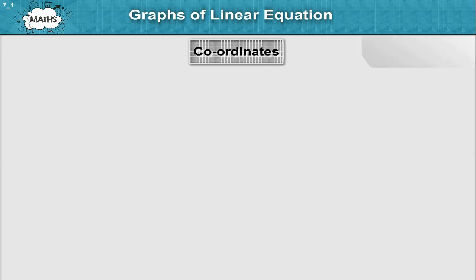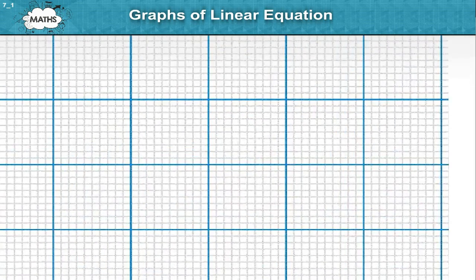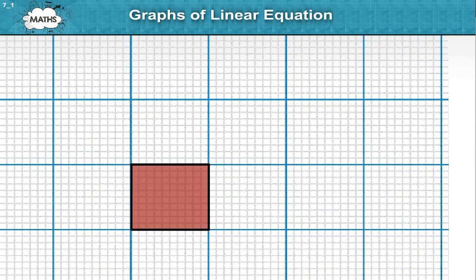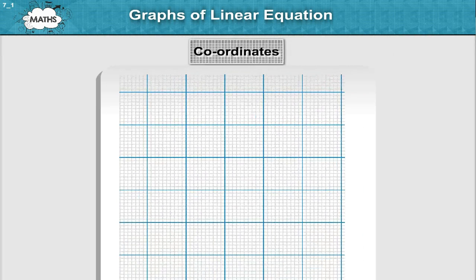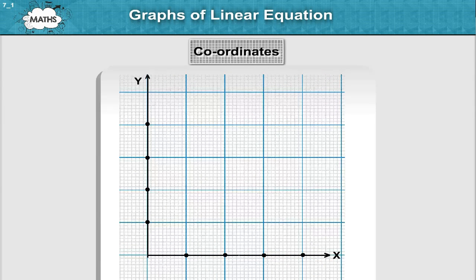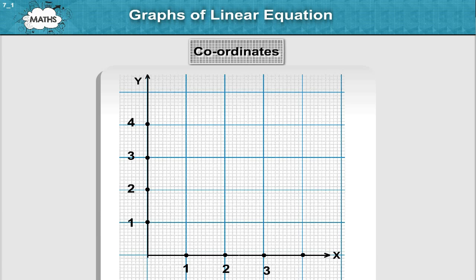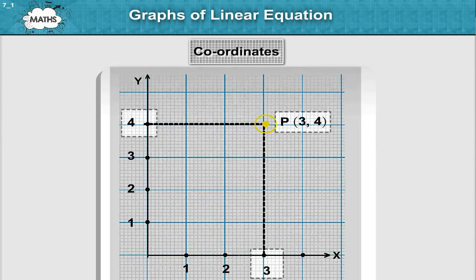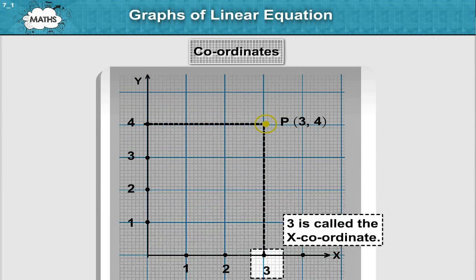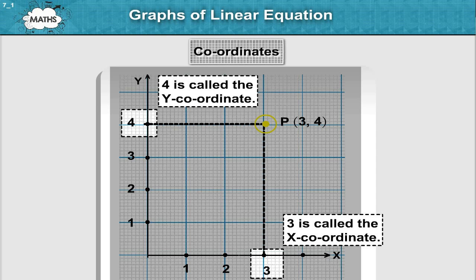Coordinates. The graph sheet itself is a square grid. We draw x and y-axis conveniently and then fix the required points. Suppose P(3, 4). Here, 3 is called the x-coordinate and 4 is called the y-coordinate. And we say that coordinates of point P are 3 and 4.